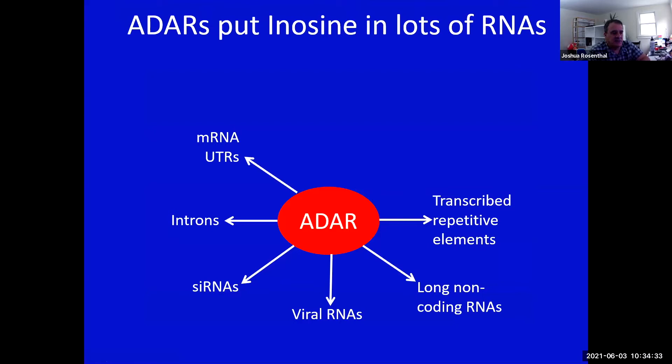Now there are inosines all over every kind of RNA you can think of. The most common targets are actually transcribed repetitive elements. Inosines are in long non-coding RNAs, viral RNAs when they get injected into the cell or get transcribed into the cell can be edited. siRNAs, introns can get edited and that'll change splicing patterns. Untranslated regions can get edited and that can change message stability. But the first focus and what I focused my whole career on is looking at inosines in messenger RNAs and the coding sequence of messenger RNAs, because when they're there, they have the capacity to recode codons and change proteins.